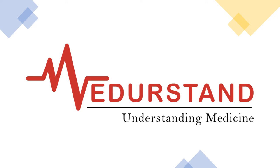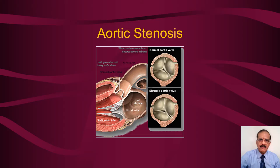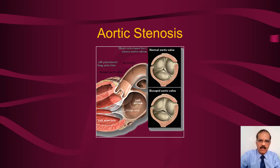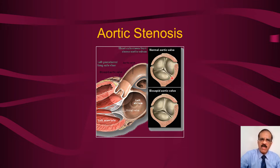Welcome to Understanding Medicine. I'm Professor Azizu Rahman, and in our series of lectures on valvular heart disease we are going to talk about aortic stenosis today. You can recognize this valve — this is the aortic valve, the normal aortic valve, which consists of three cusps. This is also called the inverted Mercedes-Benz sign.